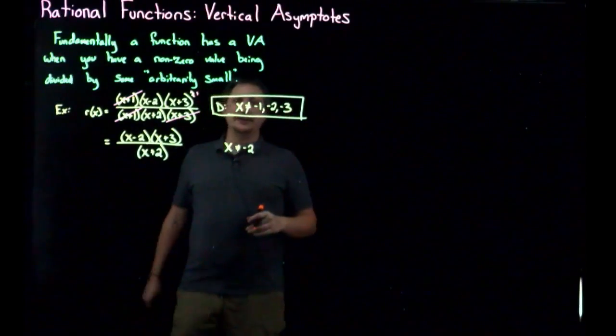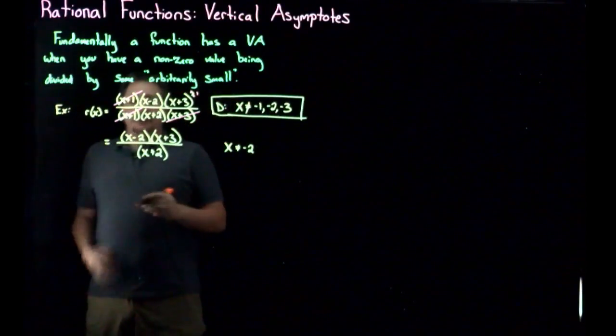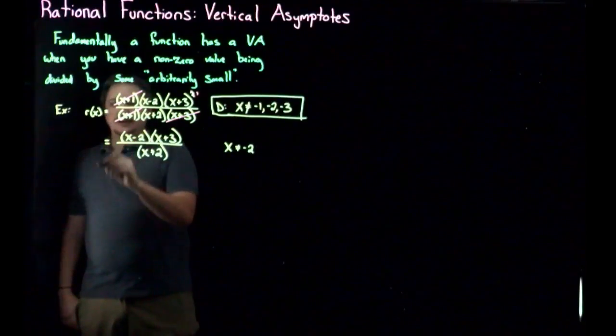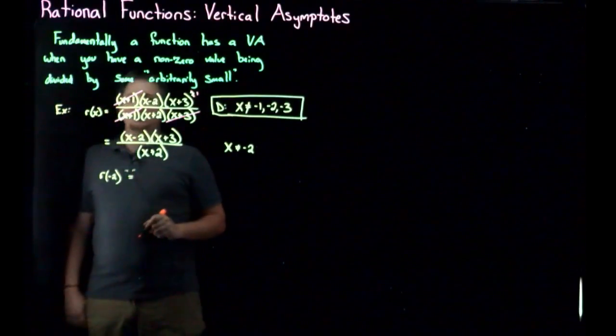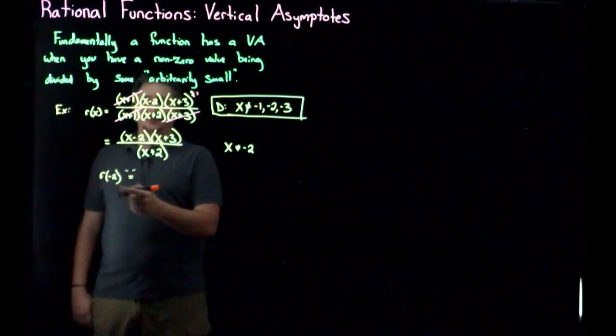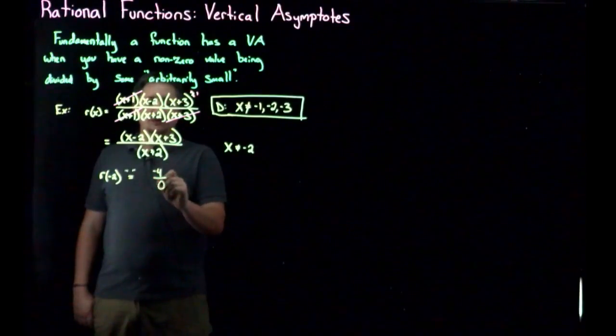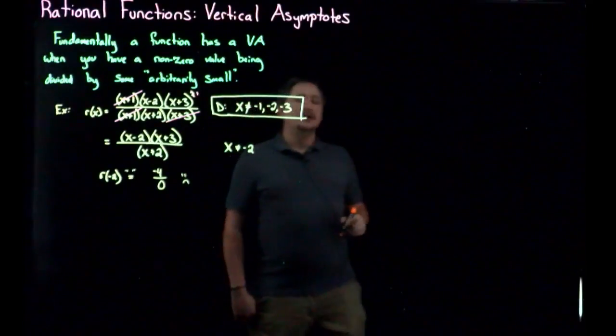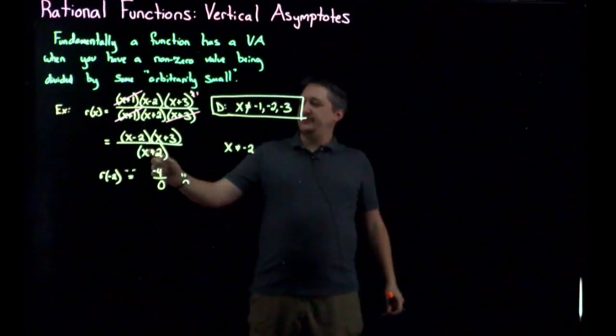But here, if I try to plug in negative 2, I get something really bad. If I tried plugging in negative 2, let's see what would actually happen. So here, r of negative 2, I'm going to write this as equals with a quotation mark because this doesn't exist. But what I would get is negative 4 times negative 1, that's negative 4, over 0, which should make me sad because that's not really a thing.